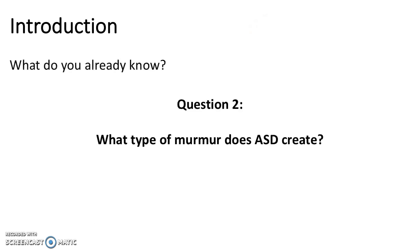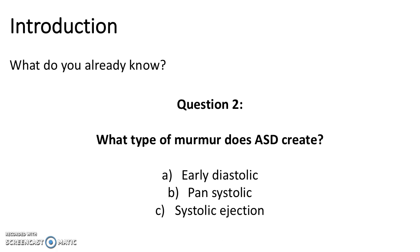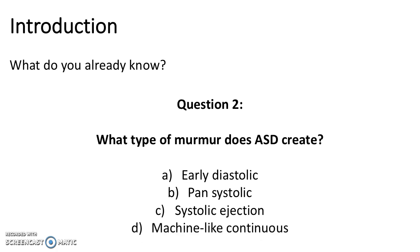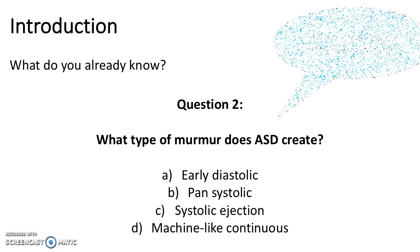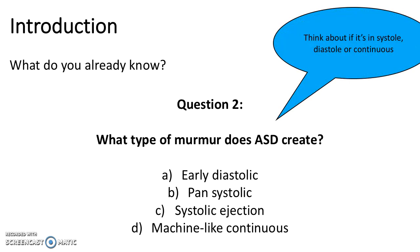Question 2. What type of murmur does ASD create? Is it A. Early diastolic, B. Pan-systolic, C. Systolic ejection, or D. Machine-like continuous? Think about if it's in systole, diastole, or continuous. The answer is systolic ejection.